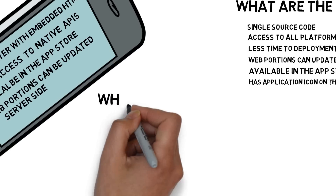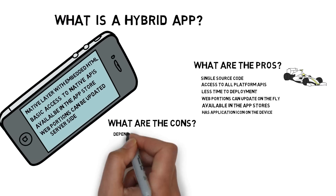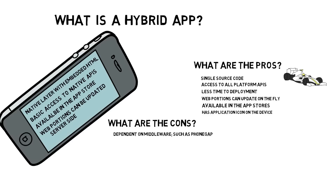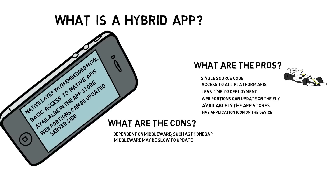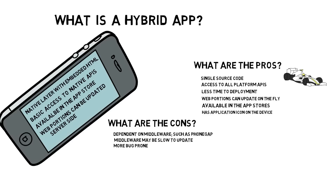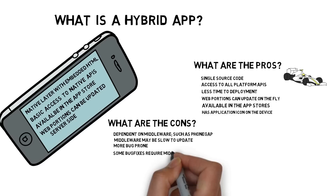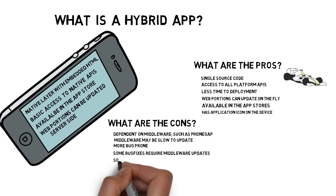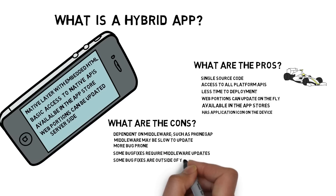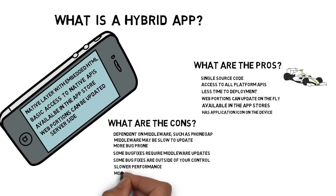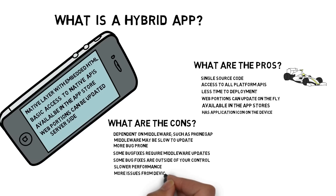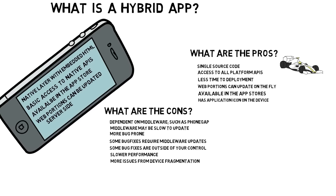What are the cons? The hybrid app may be dependent on middleware, and that middleware may also be slow to update. They're more bug-prone, and some bug fixes require the middleware updates themselves — meaning some fixes are completely outside of your control. They usually have somewhat slower performance and more issues from device fragmentation. To clarify, middleware means something similar to PhoneGap applications.